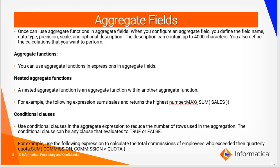You define the field name, data type, precision, scale, and an optional description, which can contain up to 4000 characters. An aggregate function can be a single function, a nested aggregate function, or a conditional clause. A nested aggregate function is an aggregate function within another function. For example, an expression can return the sum of sales and that will in turn return the highest maximum sale.